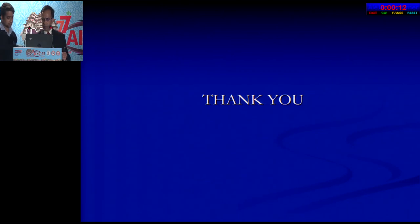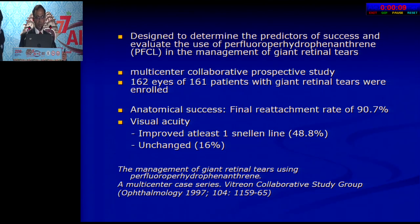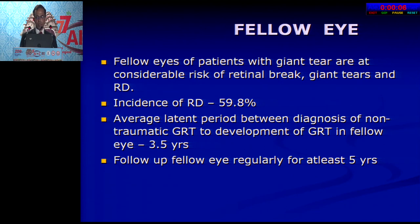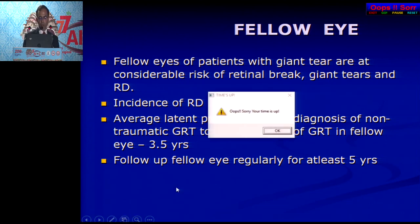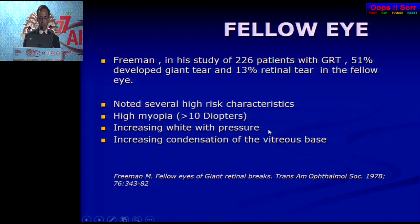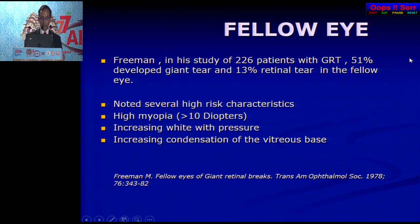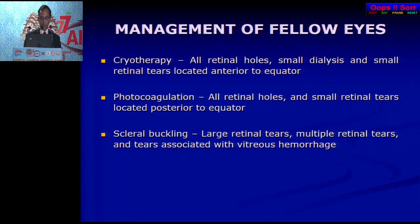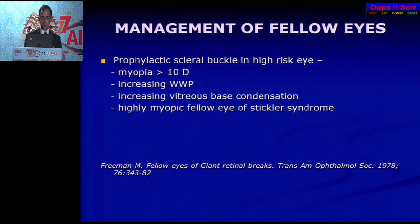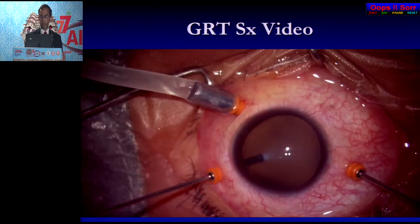Regarding the fellow eye: these are eyes prone to GRT with considerable risk — incidence as much as 59.8%, with an average latent period of about 3.5 years. They should be followed regularly. Freeman identified high-risk characteristics including high myopia greater than 10 diopters, increasing white-with-pressure, and increasing condensation of the vitreous base. Freeman has even recommended prophylactic scleral buckle in high-risk fellow eyes.